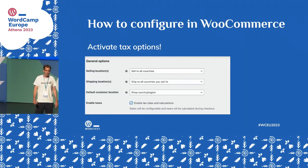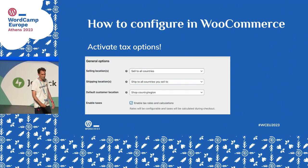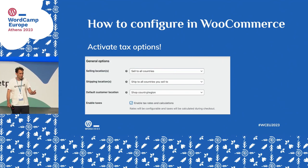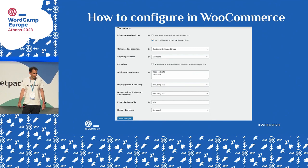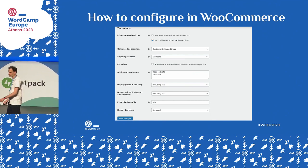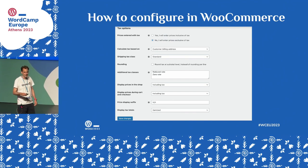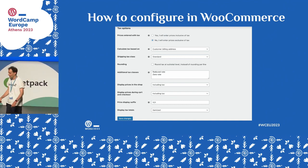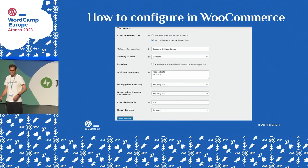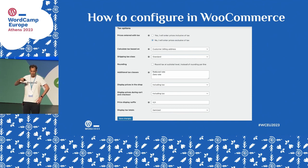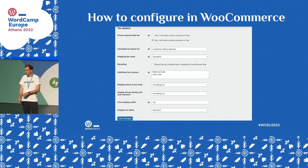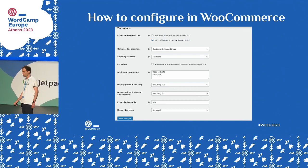How can you configure all of this in WooCommerce? First, you have to enable tax calculation — make sure you check the box so you can start configuring taxes. I always recommend inputting prices exclusive of taxes, because if you do it tax-inclusive and rates change, you have to update all your pricing. You'd also want to calculate taxes based on your customer's address, as that's usually what's required. Shipping tax is usually standard in most locations, but check with your tax advisor.